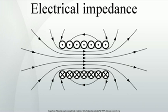The impedance of an ideal resistor is purely real and is referred to as a resistive impedance; in this case, the voltage and current waveforms are proportional and in phase. Ideal inductors and capacitors have a purely imaginary reactive impedance. The impedance of inductors increases as frequency increases, while the impedance of capacitors decreases as frequency increases. In both cases, for an applied sinusoidal voltage, the resulting current is also sinusoidal but in quadrature — 90 degrees out of phase with the voltage. However, the phases have opposite signs: in an inductor, the current is lagging; in a capacitor, the current is leading. The inductor and capacitor impedance equations can be rewritten in polar form, where the magnitude gives the change in voltage amplitude for a given current amplitude, while the exponential factors give the phase relationship.